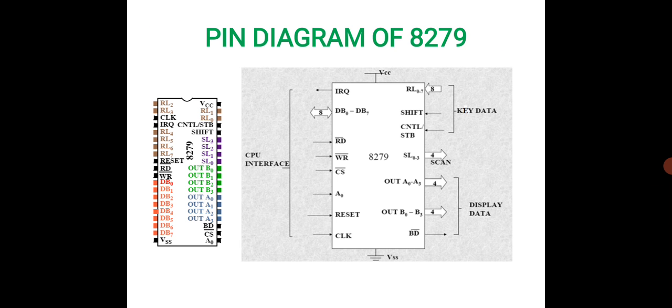We have a blank display which can display or blank the display. Coming to the CPU interface section, we have the data bus lines DB0 to DB7, read line, write line, chip select which is low only when 8279 is selected, and A0 is normally connected to the address line of the microprocessor.